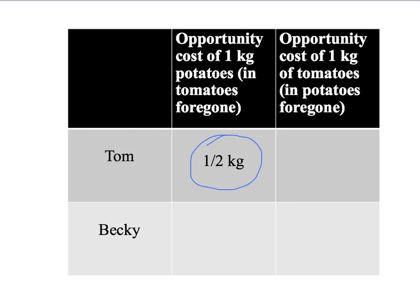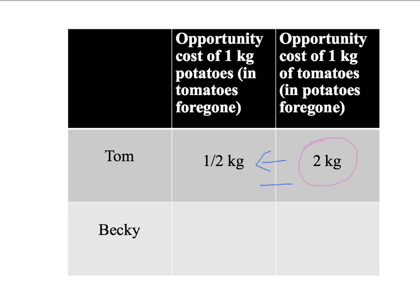What about Tom's opportunity cost of tomatoes? If he's producing tomatoes, he can't use that same time to produce potatoes. It takes Tom eight hours to produce a kilogram of tomatoes and four hours to produce a kilogram of potatoes. So in the eight hours he takes to produce one kilogram of tomatoes, he could have produced two kilograms of potatoes. Tom's opportunity cost of one kilogram of tomatoes is two kilograms of potatoes forgone. Notice that Tom's opportunity cost of potatoes is just the inverse of his opportunity cost of producing tomatoes.